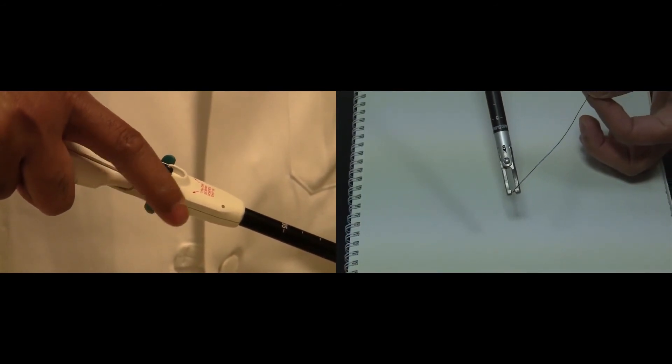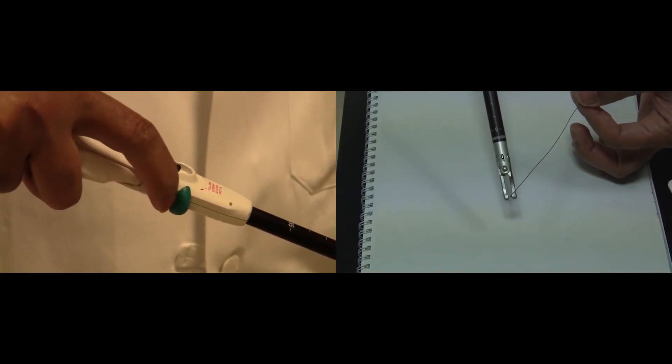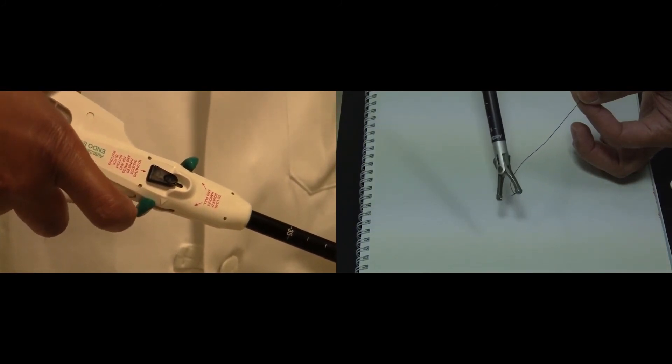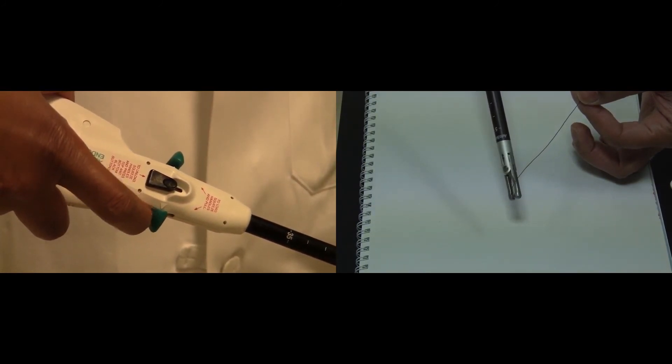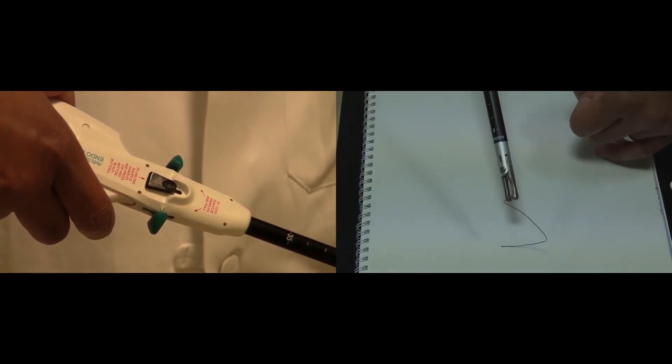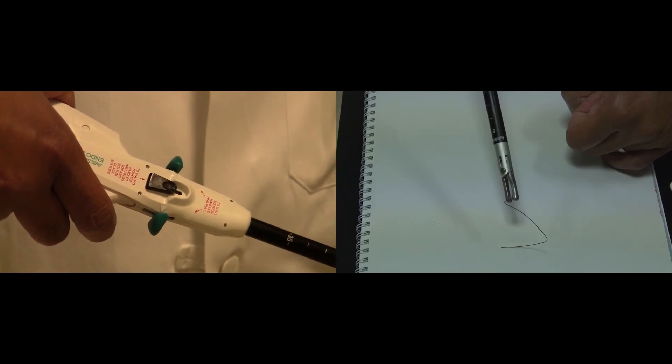You want to test the needle by toggling back and forth to make sure that it's transferring from one side to the other smoothly. Remember, at any time the levers are in the midpoint position, that's going to lock your device at the tip and not permit movement. That is how you load and unload a needle on the endostitch suturing device.